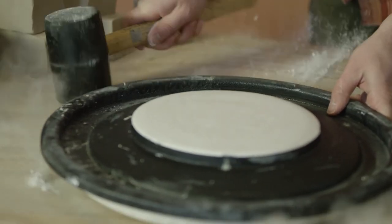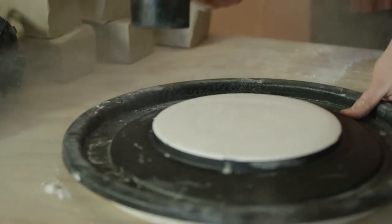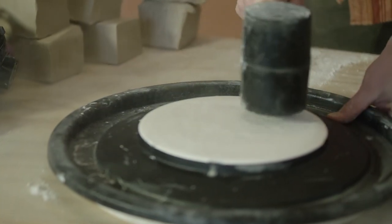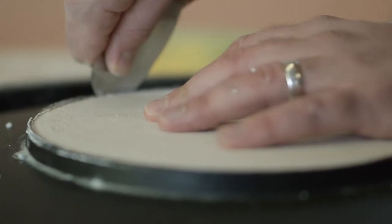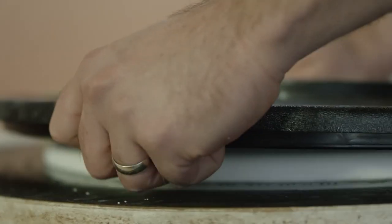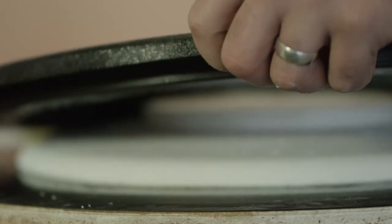I typically whack the table a couple of times. That breaks the surface tension on the flat side of the mold and then the plastic mold just gets peeled away from the surface exposing the back side.